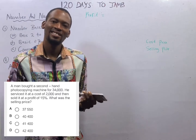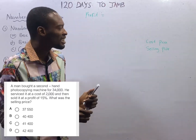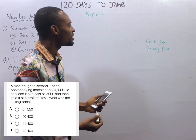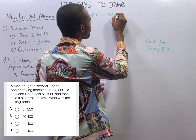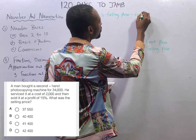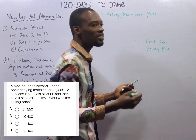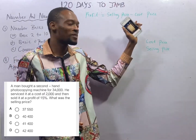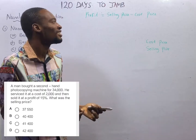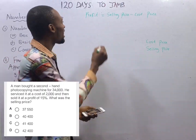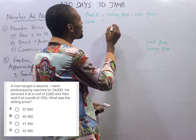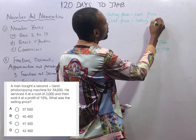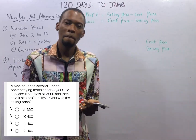If your selling price is bigger than your cost price, it simply means that you are selling more than how much you bought. In that case, you've made profit. So profit is selling price minus cost price, and selling price minus cost price should give you a positive answer. If selling price minus cost price gives you a negative answer, then it is loss. Loss, on the other hand, is when your cost price is bigger than your selling price. Loss is cost price minus selling price.